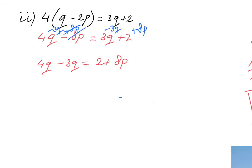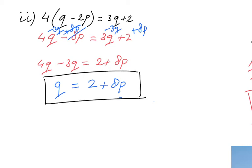4q minus 3q, that is actually 1q, equals 2 plus 8p. That's your final answer, because now q is the subject. I've rearranged the formula. It says now q equals, and so 1q equals 2 plus 8p.